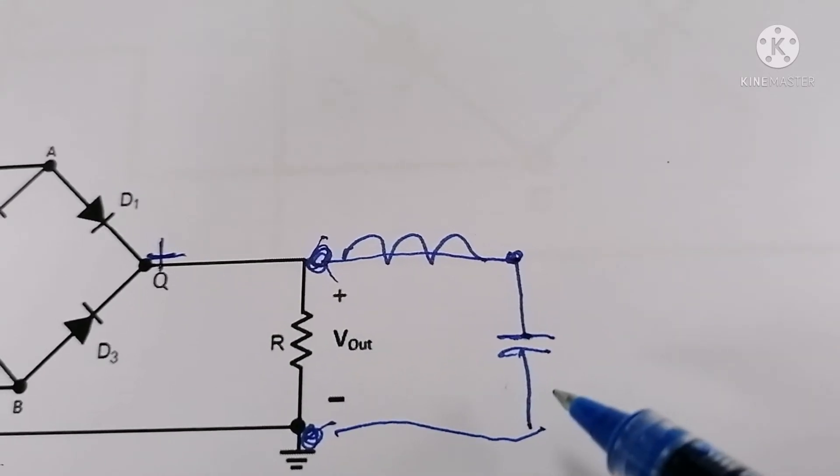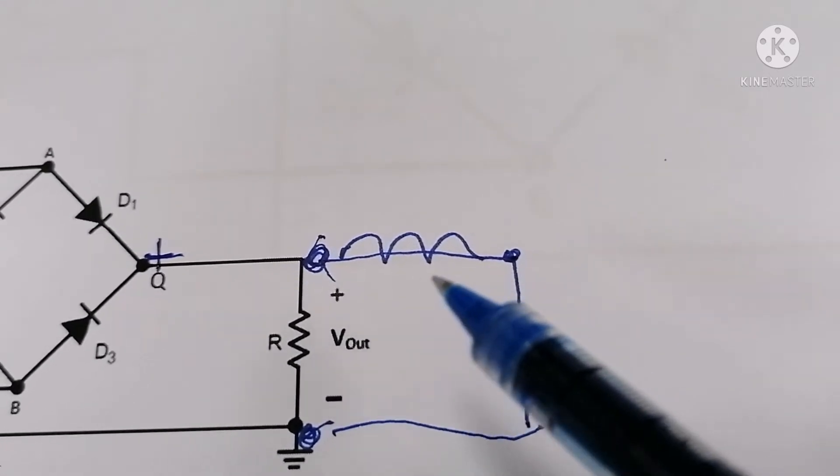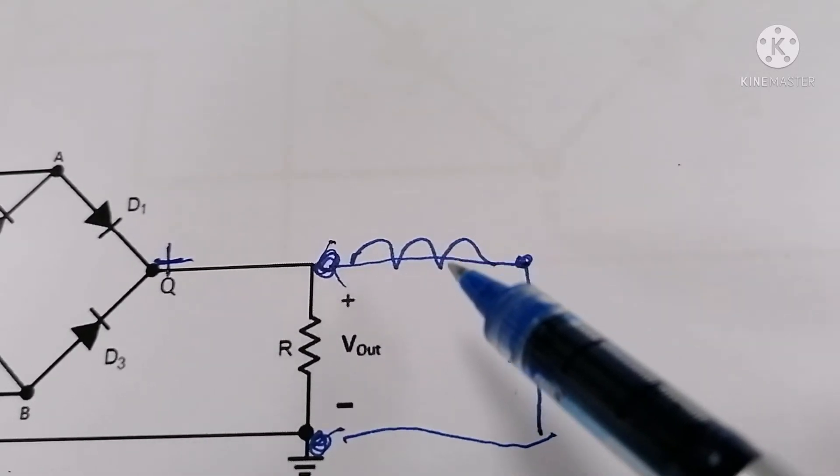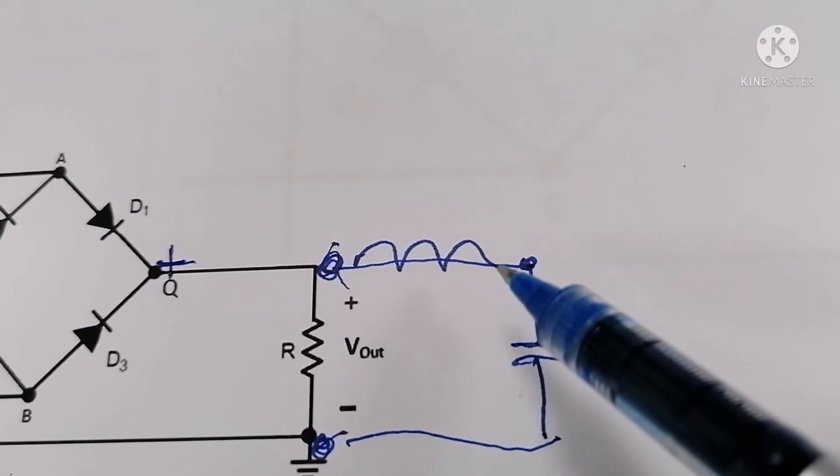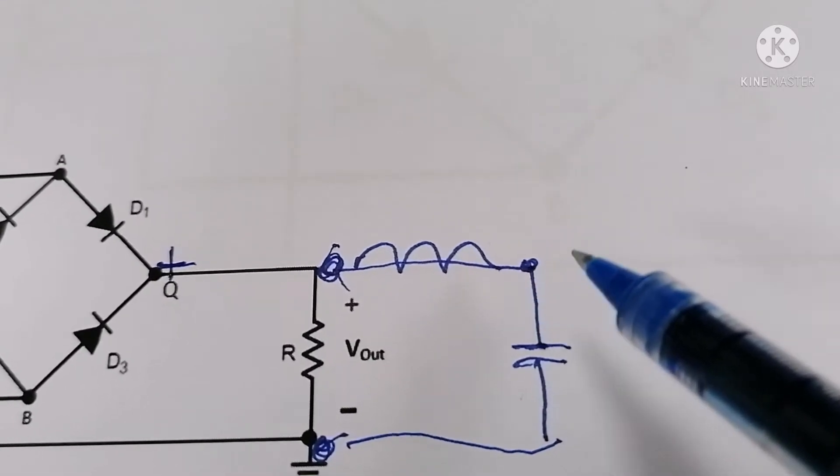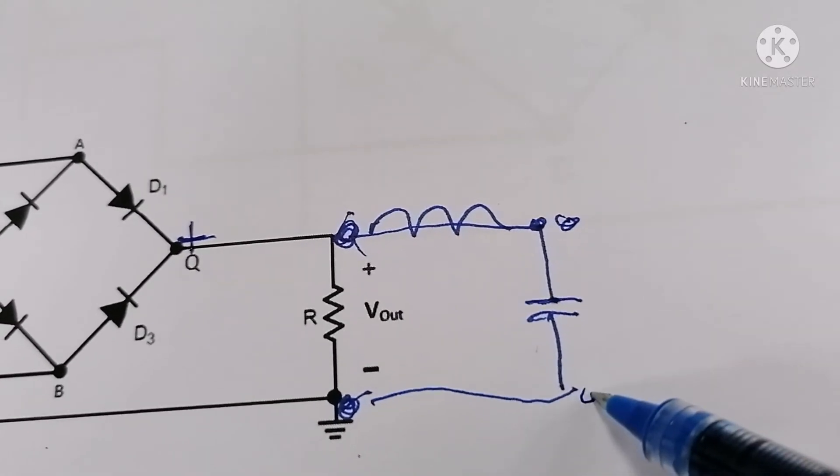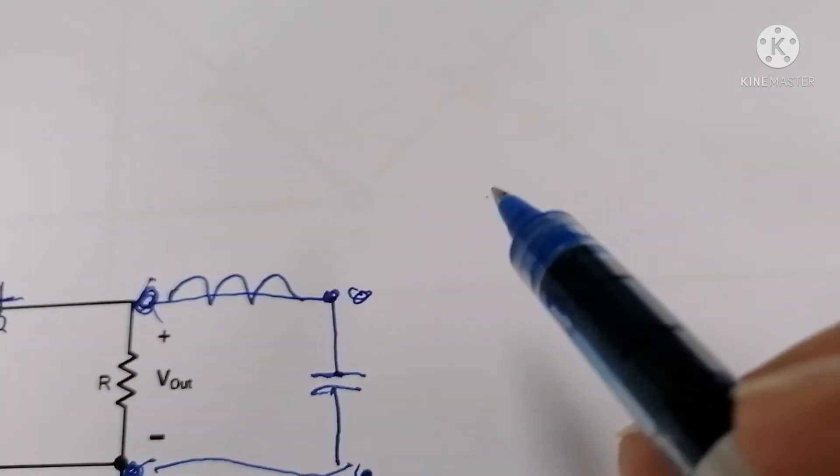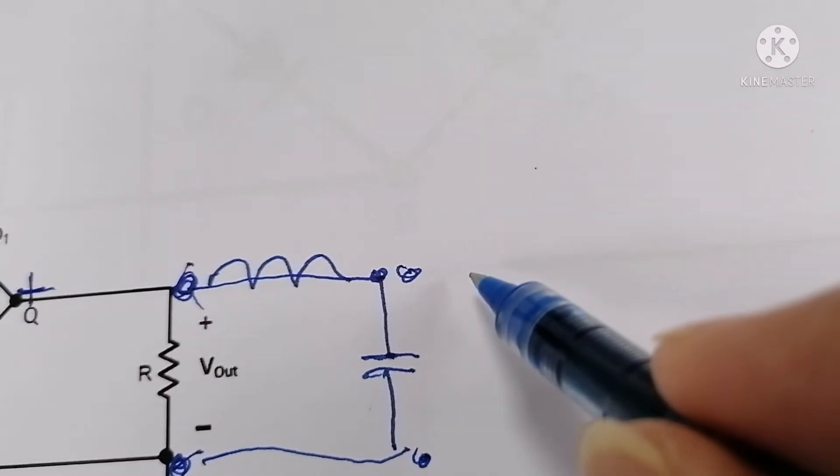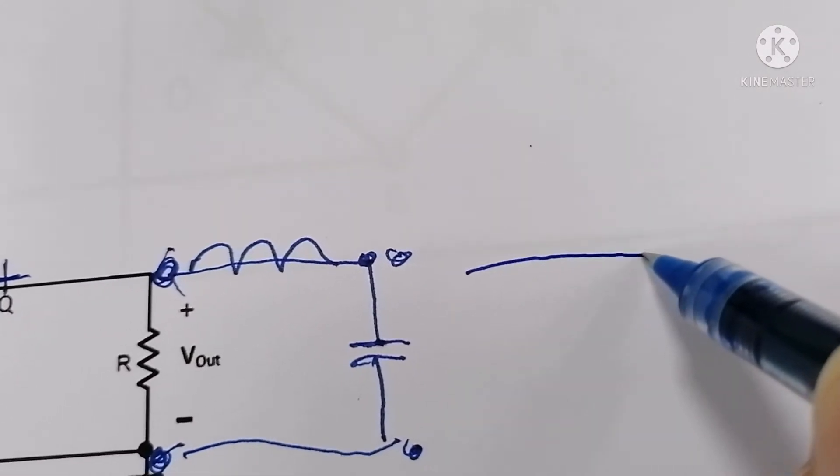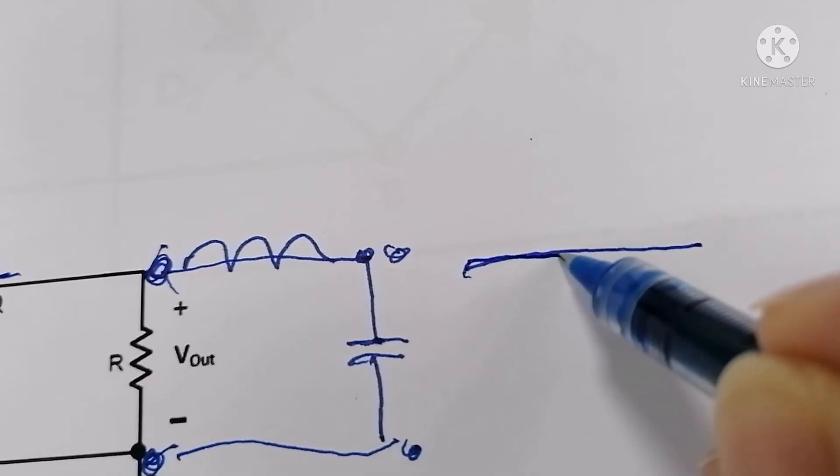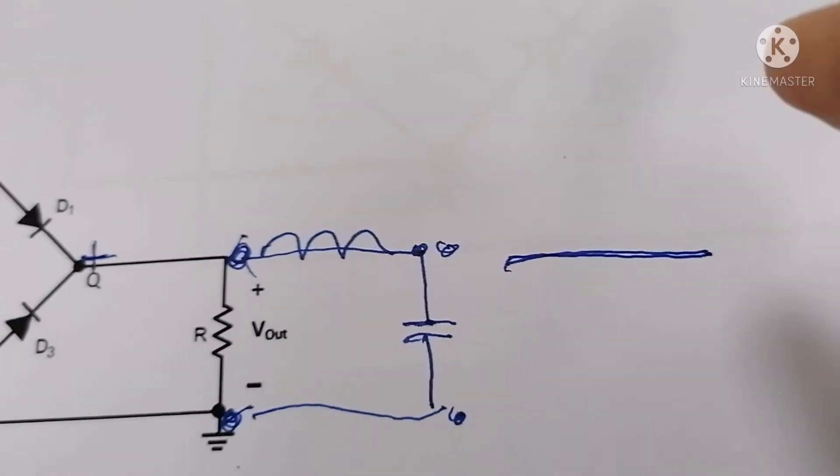Once you have this filter, the amplitude will be filtered. And when you connect the oscilloscope here we can see a straight DC like that and I will show it on the actual process.